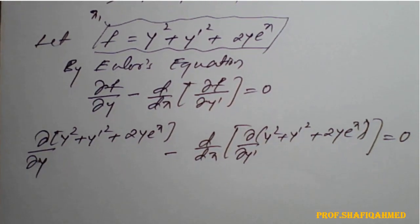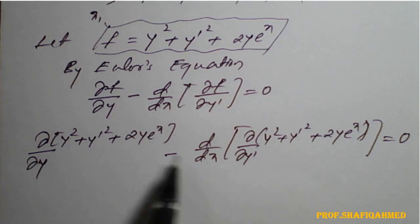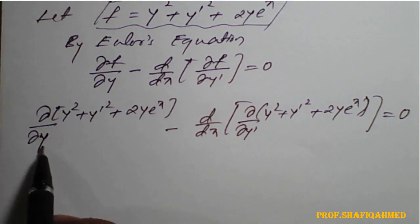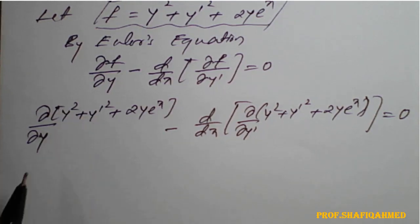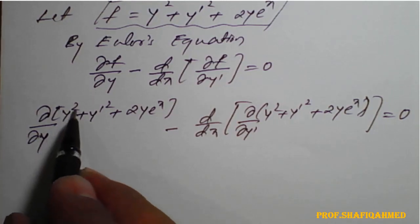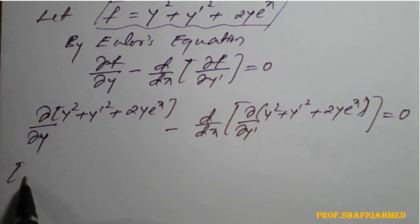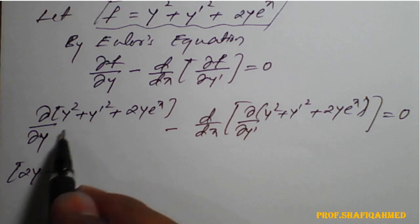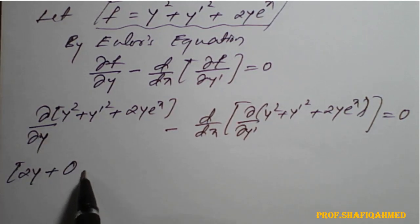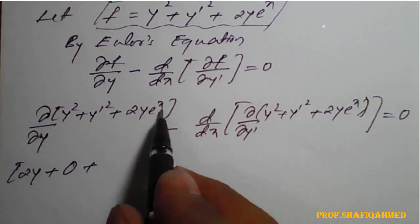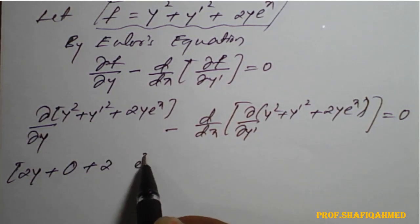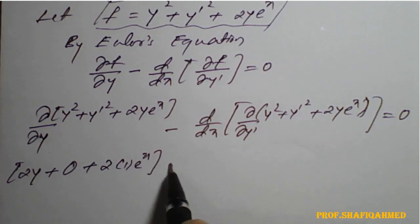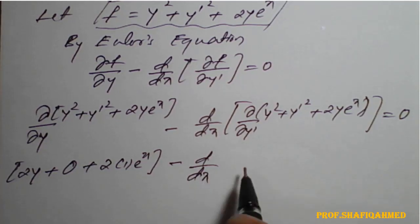Now we need to find the partial derivative with respect to y for the given function f. The partial derivative of y squared with respect to y is 2y; y-dash squared with respect to y is 0 (constant); and 2e raised to x is constant, so partial derivative of y with respect to y gives 1, yielding 2y plus 2eˣ. Then minus d/dx of the bracket.